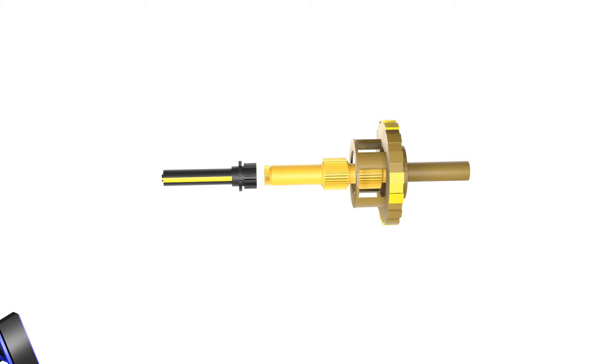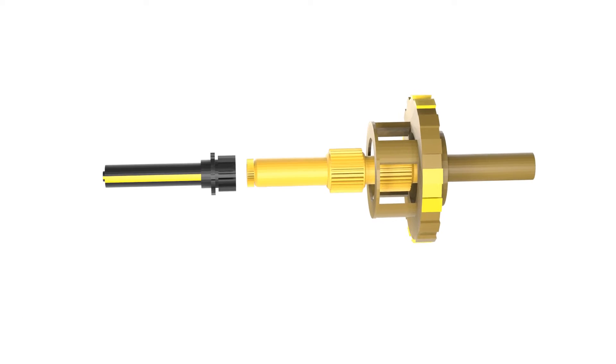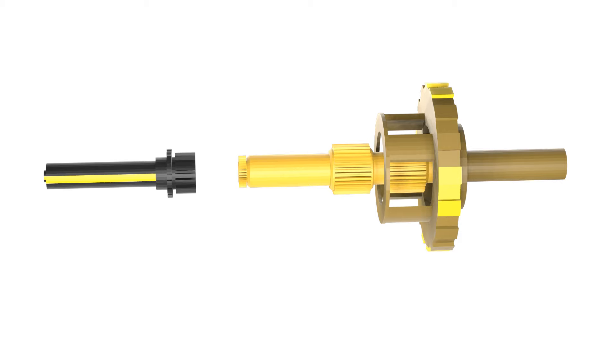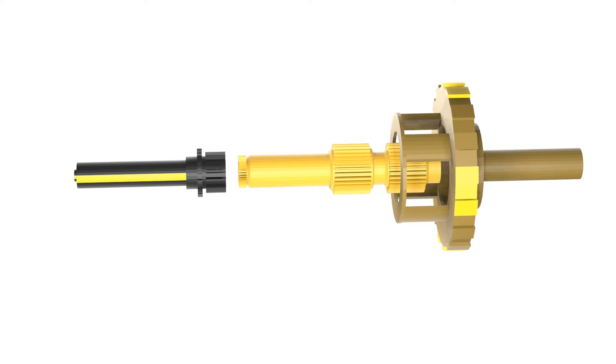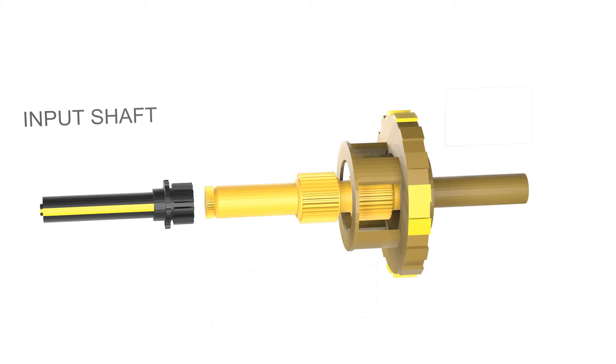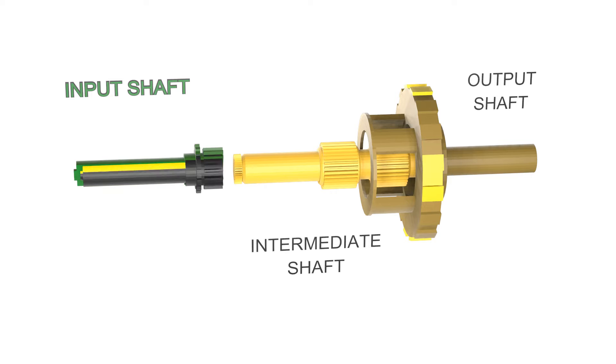There are three shafts in the transmission. They connect to each other in some way that allows the vehicle to move. Here is the input shaft, intermediate shaft, and the output shaft. The input shaft has power coming from the engine through the torque converter. The input shaft is always turning.